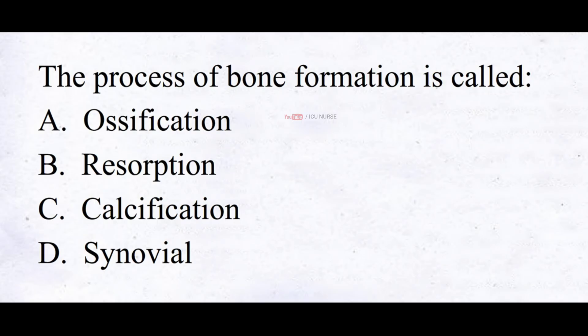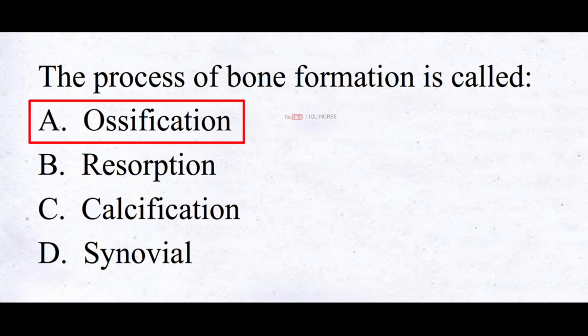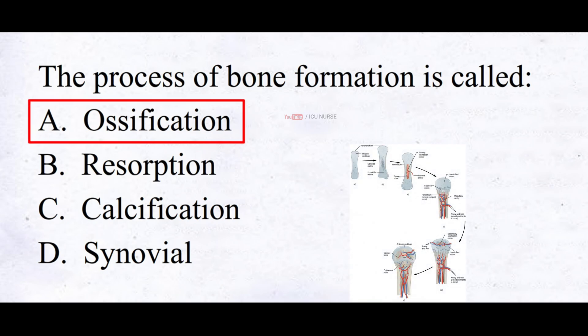The process of bone formation is called: A. Ossification, B. Resorption, C. Calcification, D. Synovial. And the correct answer is A. Ossification. Ossification refers to the process by which new bone tissue is formed. It is a natural biological process that occurs during fetal development, growth, and repair of bones throughout life.